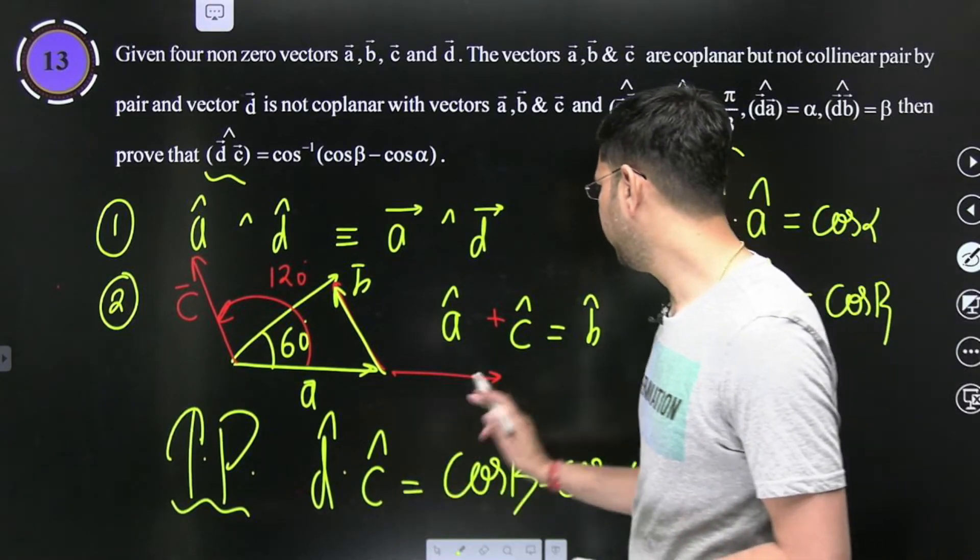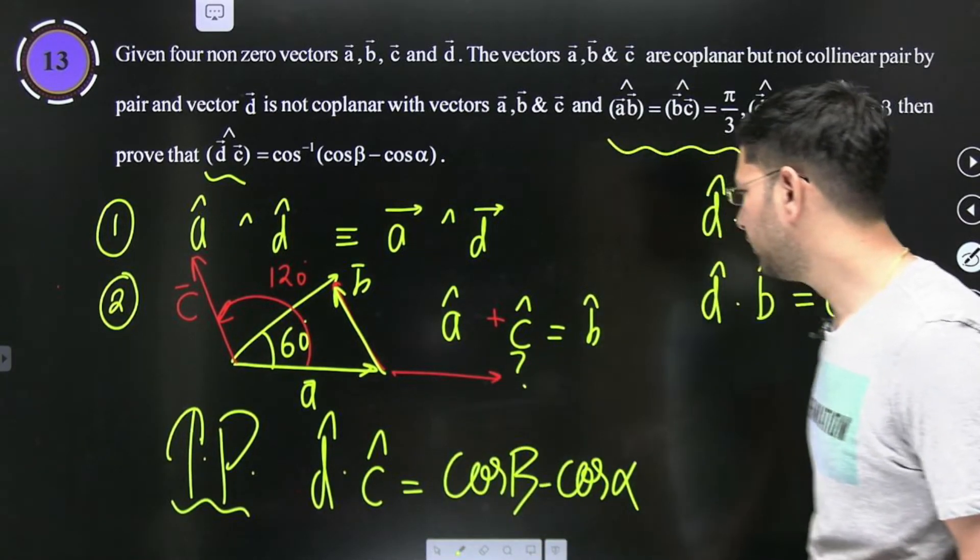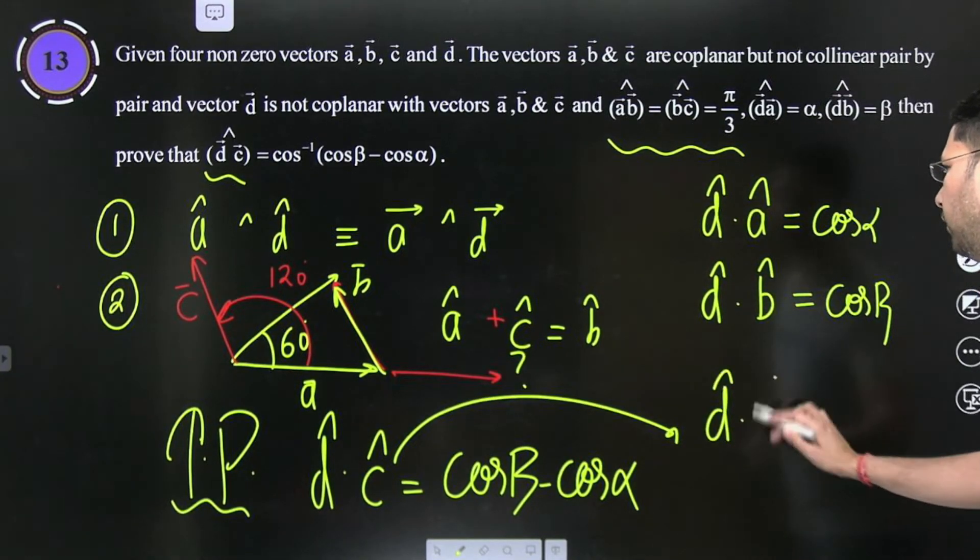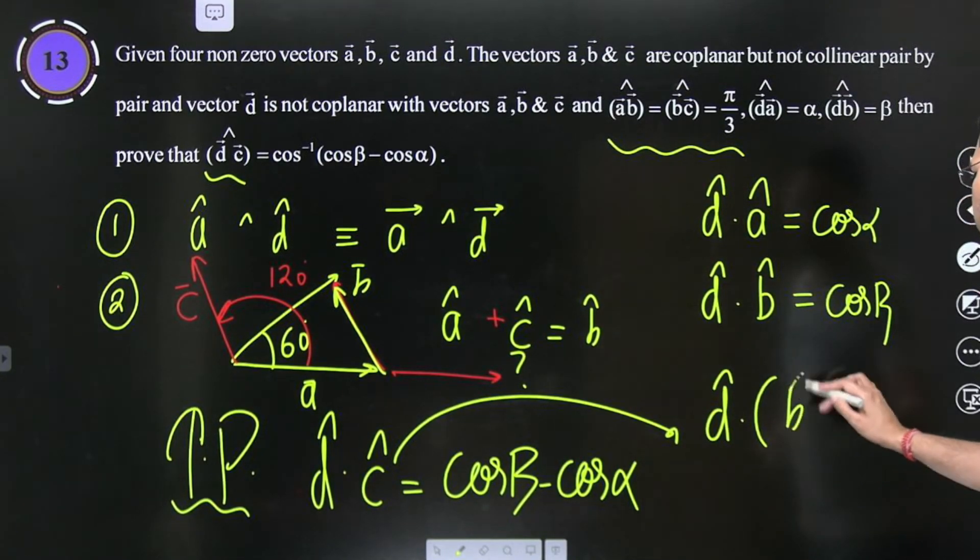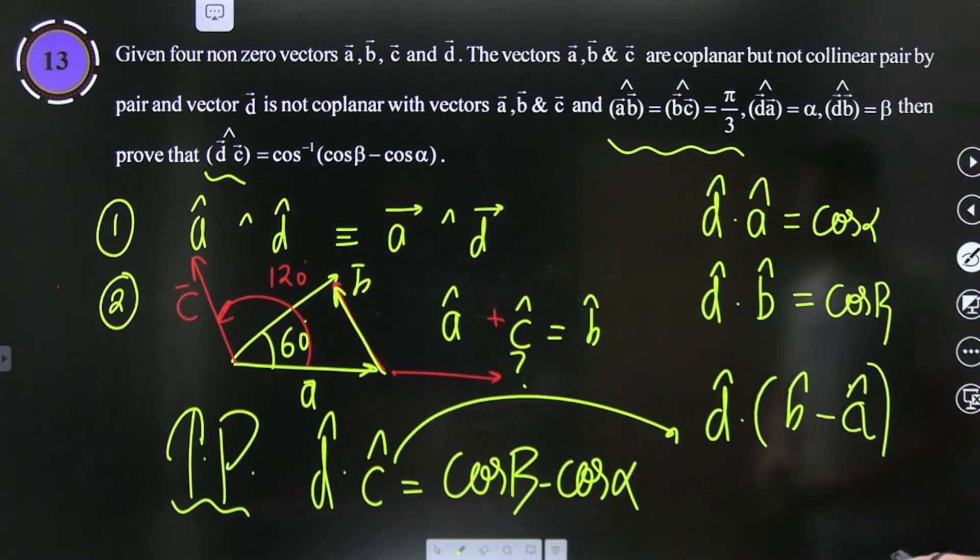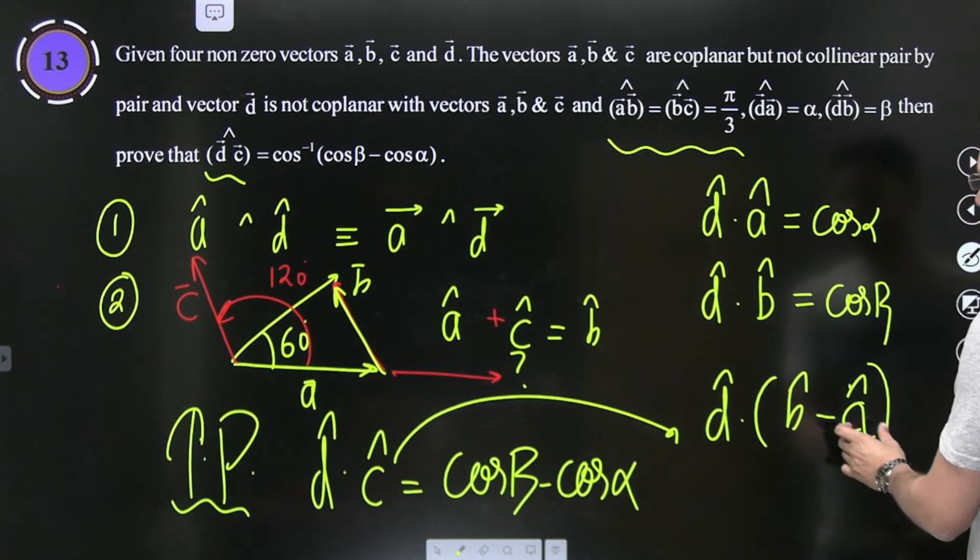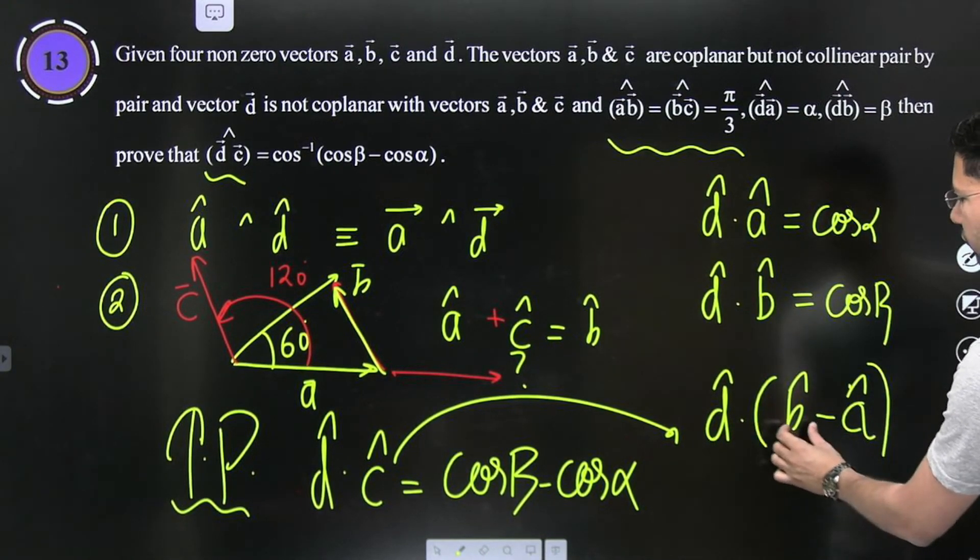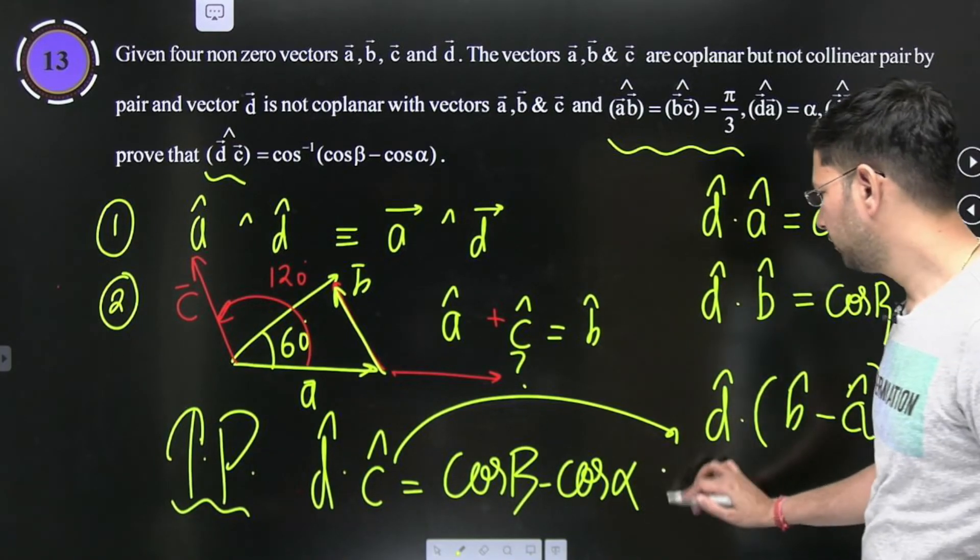Kuch nahi karna. Bachon, c cap ki jaga yaha se utha ke b cap minus c cap rakhdo. Thik hai na. Maine kya, maine ye observe kiya ki d cap dot c cap kya hai, b cap minus a cap hai na. B cap minus a cap hai. To d cap dot b cap minus a cap kitna hoga, yaha se dekho. Cos beta minus cos alpha kitna ho dikhega. This dot this minus this dot this.